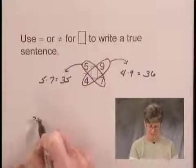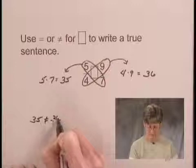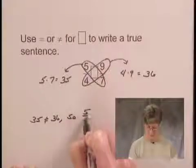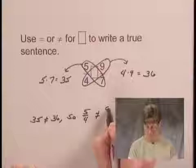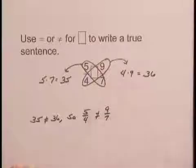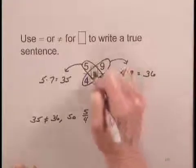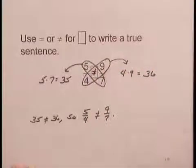35 is not equal to 36. So we know that 5 over 4 is not equal to 9 over 7 and that would tell us that we fill in this box with the not equal sign.